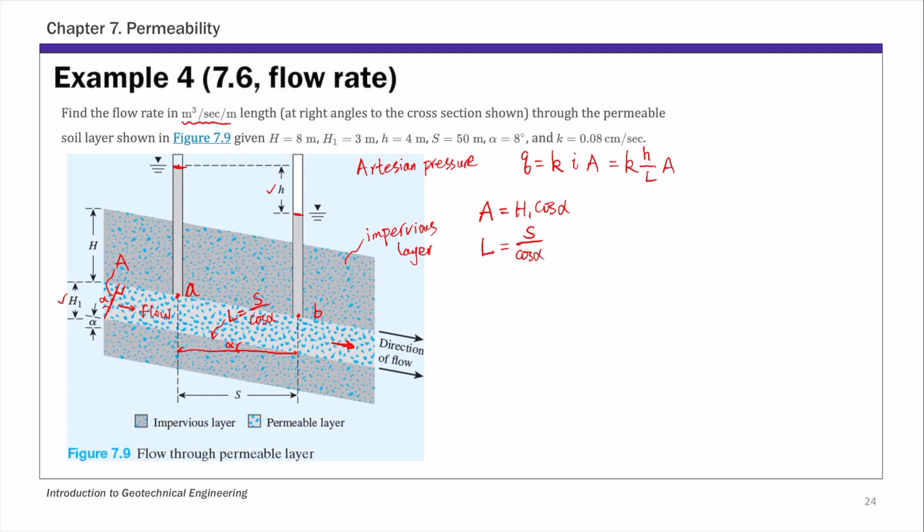And that head loss, we used delta H previously. In this example, it's simply H. And this is 4 meters. So with all this, we can calculate the flow rate.